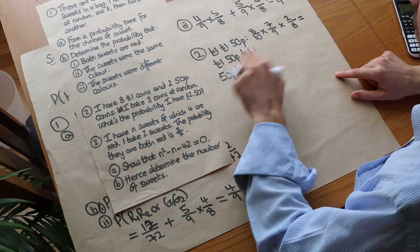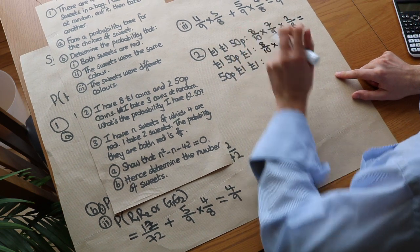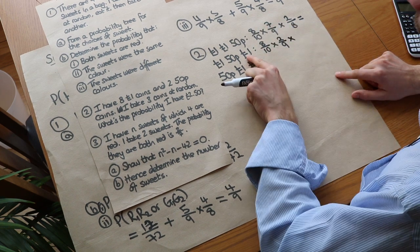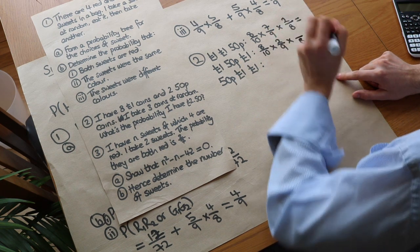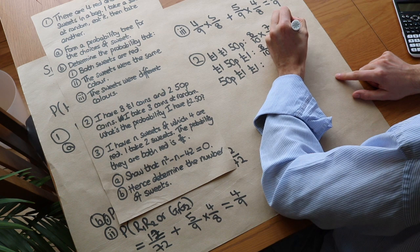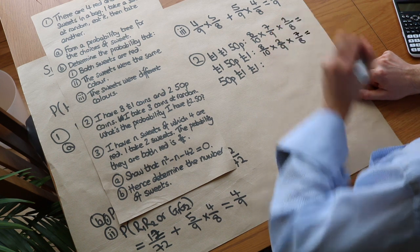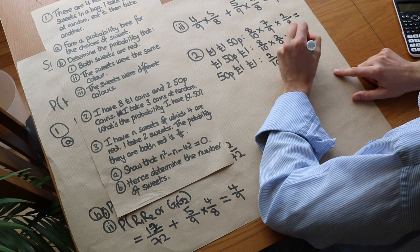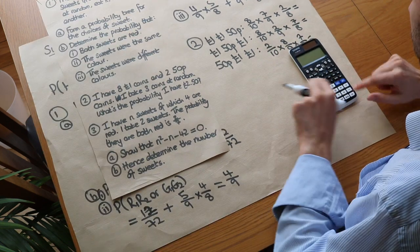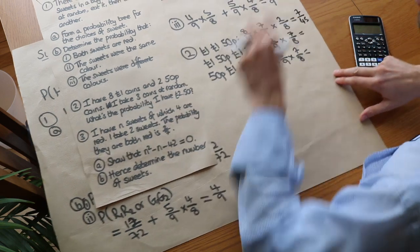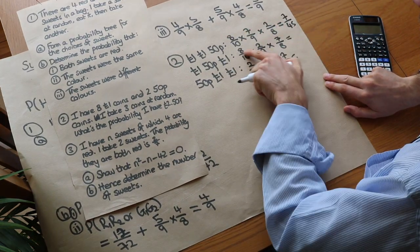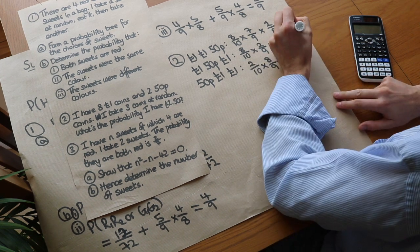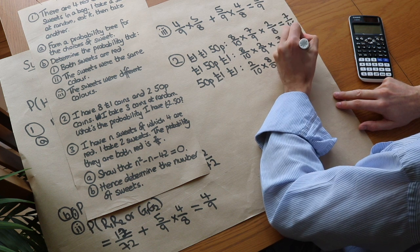For the second possibility (£1, 50p, £1): the first coin is £1 at 8 tenths, the second is 50p at 2 ninths, and the last is £1 at 7 eighths. For the third possibility (50p, £1, £1): it's 2 tenths times 8 ninths times 7 eighths. Notice that in each case the numerators are the same numbers in a different order and the denominators are the same, so all three give 7 over 45.